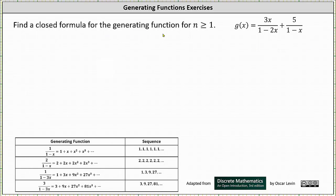We're asked to find a closed formula for the generating function for n greater than or equal to 1. We're given g of x equals 3x divided by the quantity 1 minus 2x, plus 5 divided by the quantity 1 minus x.